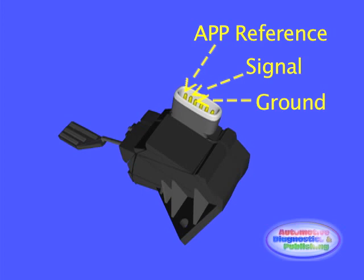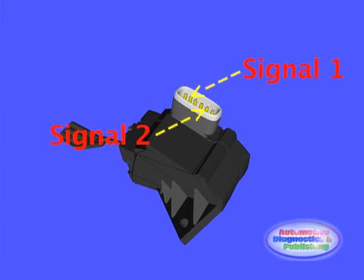Proceed to the throttle computer — look up the proper name according to the manufacturer — and uncover the wiring at the connector itself. Check the signal voltage output by using a multi-channel multimeter or oscilloscope. Connect each channel to the two or three potentiometer output signals. The need for a multi-channel scope is becoming more apparent as more sensors will be added to future vehicles.